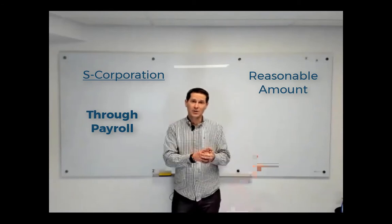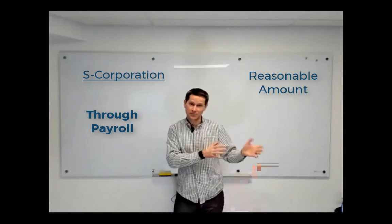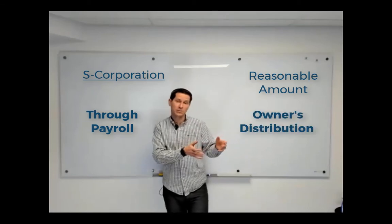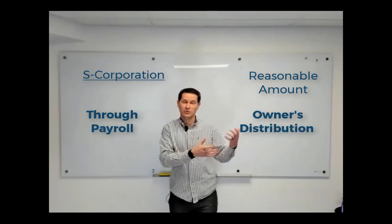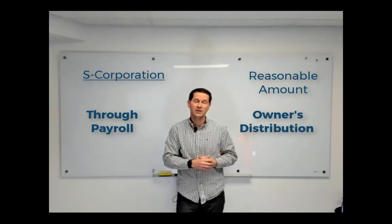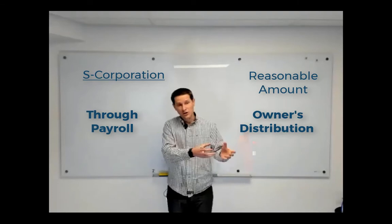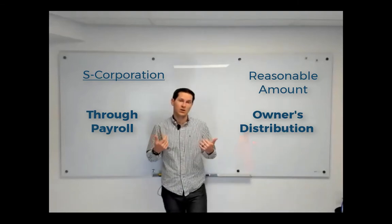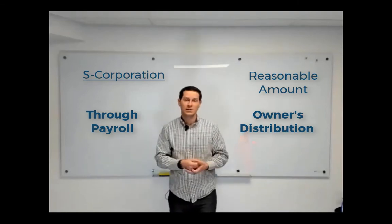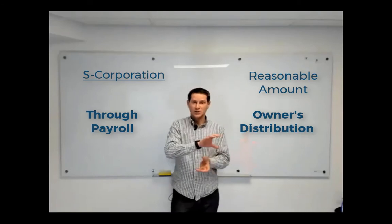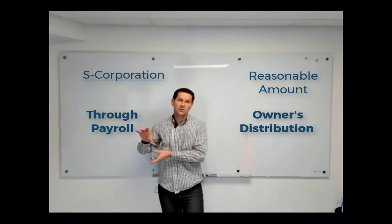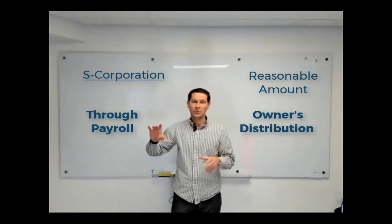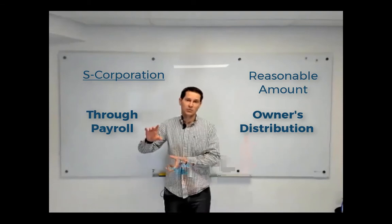The other portion of your income is an owner's distribution, much like the owner's draw of the sole proprietor and LLC, that you can just pull out via transfer, cash, withdrawal, or check. So you've got two streams of income coming out of the S corp — some payroll and some owner's distribution.